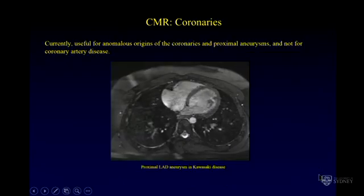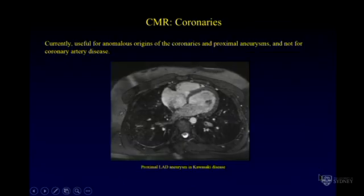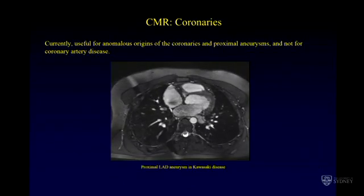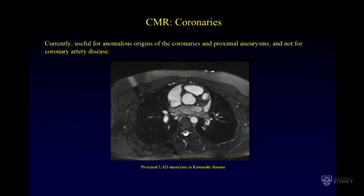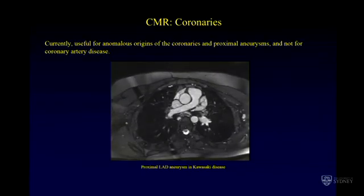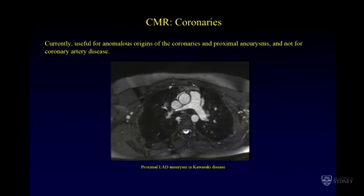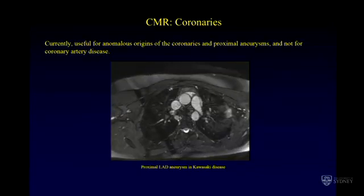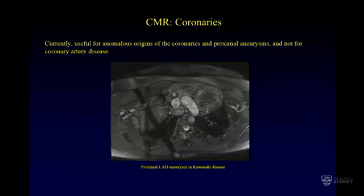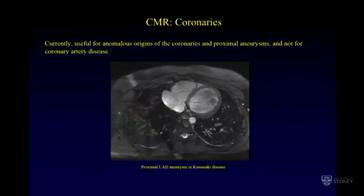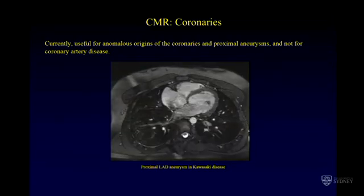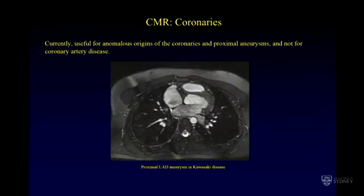For coronaries, at this time MR's main use for coronary assessment is really for anomalous origins of the coronaries and the proximal courses. You can also see proximal aneurysms, but it is not so good at this stage for coronary obstructive disease — mainly used for looking for anomalous coronary arteries, and in this case a Kawasaki patient with aneurysm.